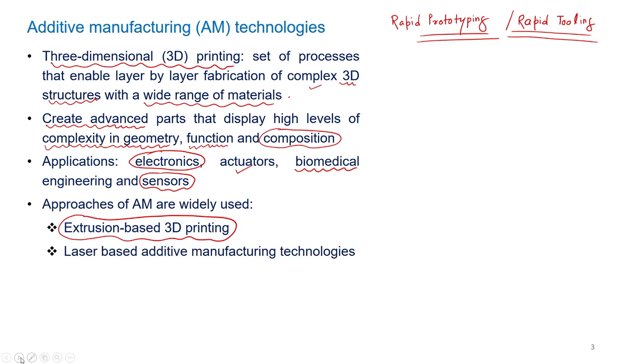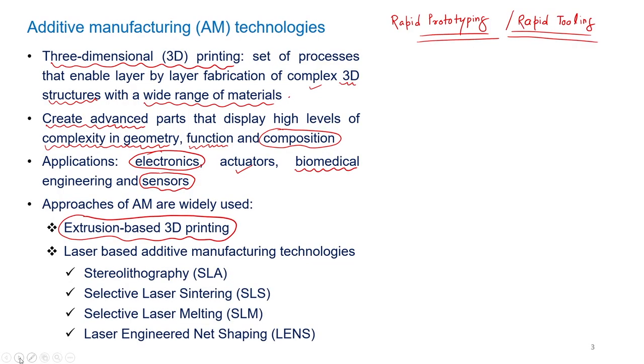When we apply lasers, we are exploiting three properties of the laser beam — monochromaticity, coherency, and precise area control over a very small area. Using these three characteristics, we can generate very complex shapes of very small size with the required surface finish and quality. So lasers help a great deal in additive manufacturing. The first laser-based process is stereolithography.